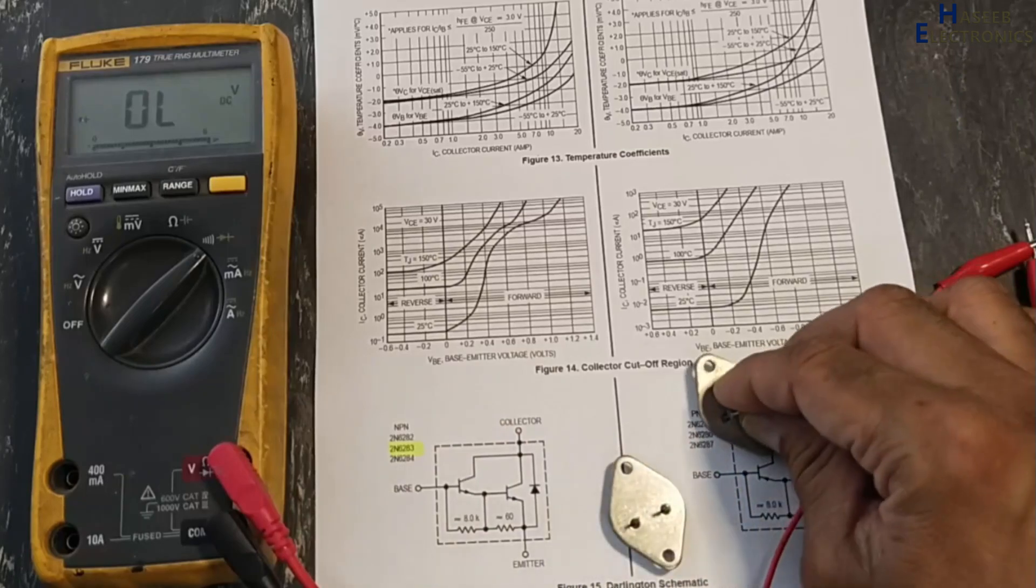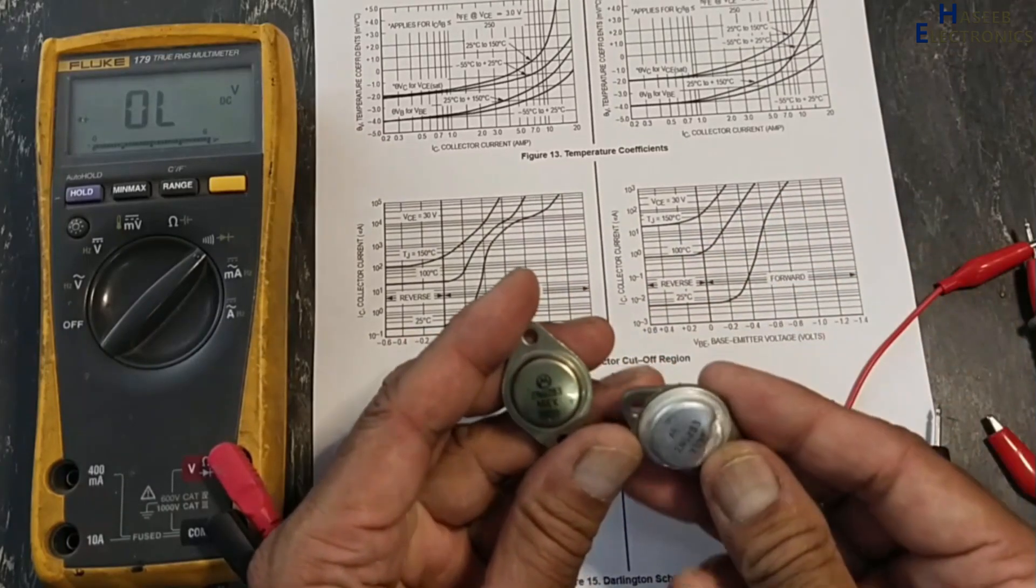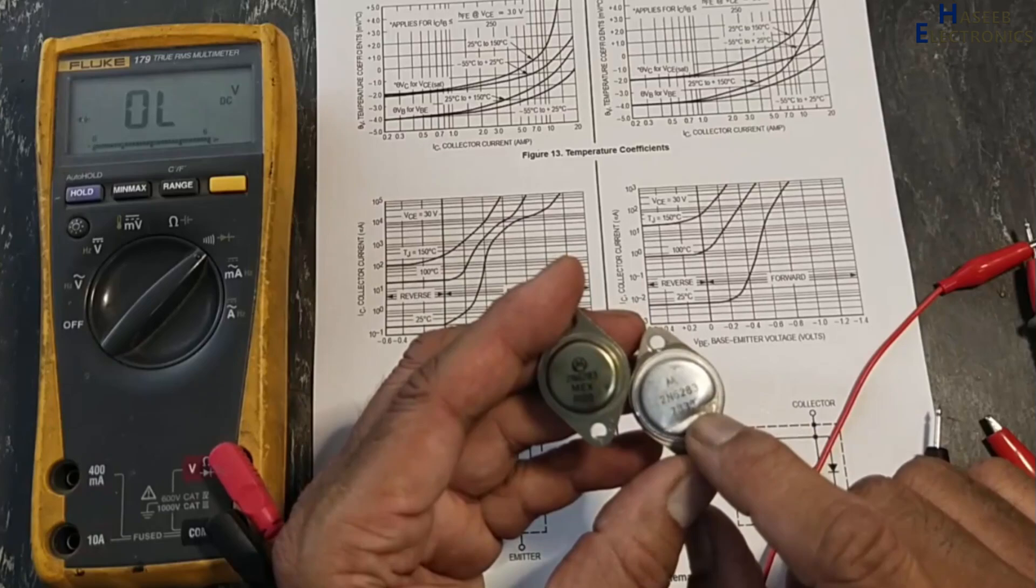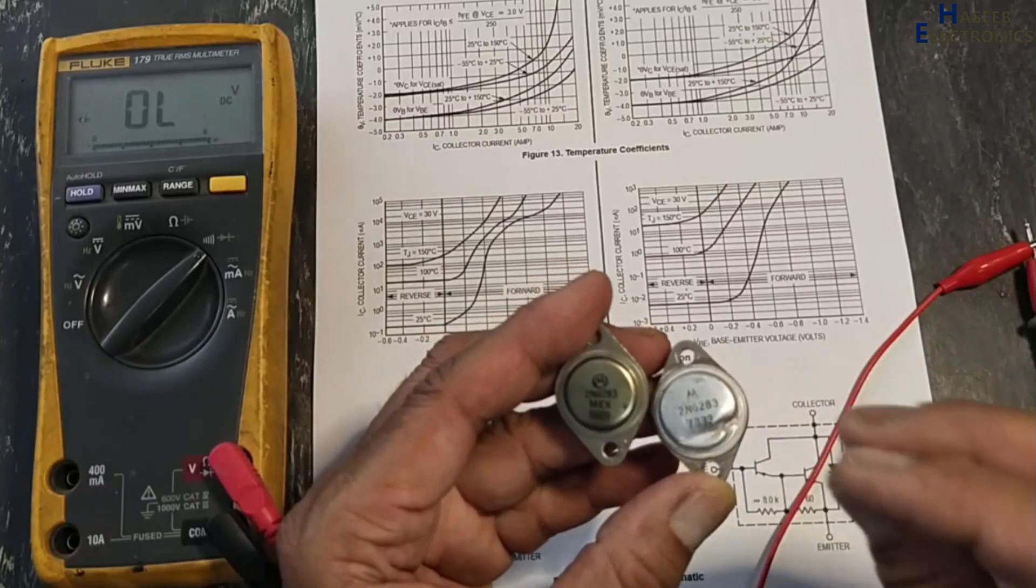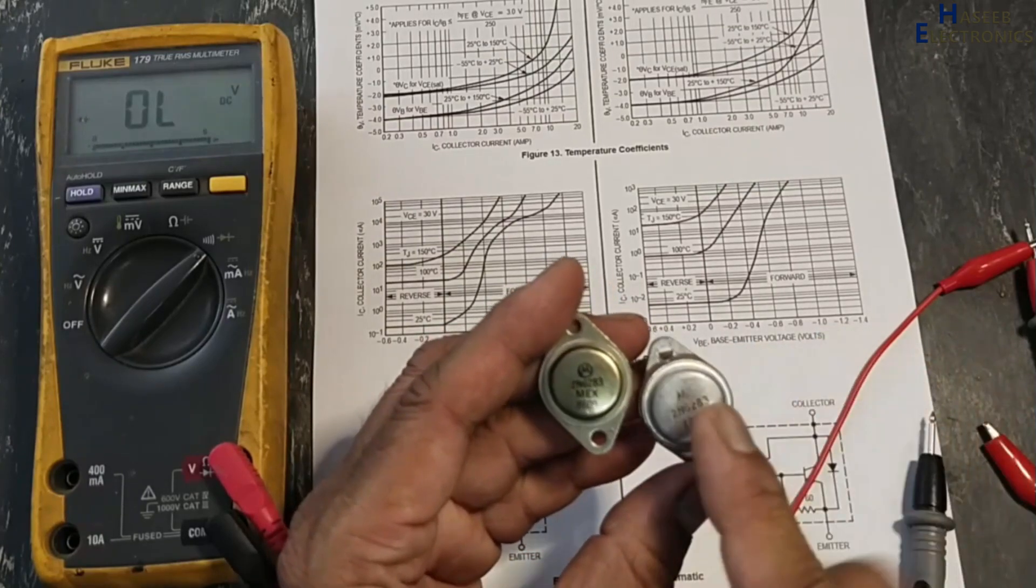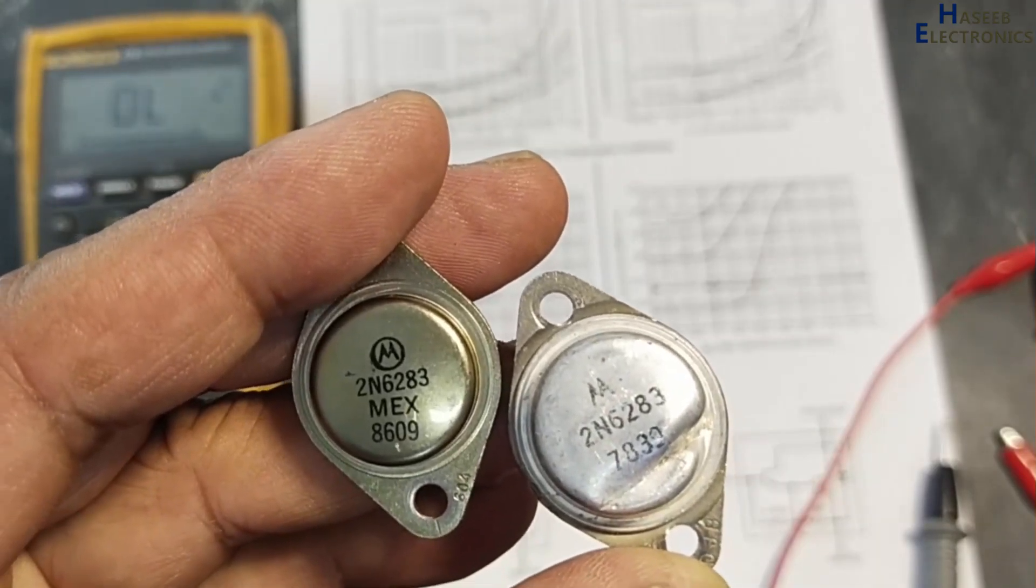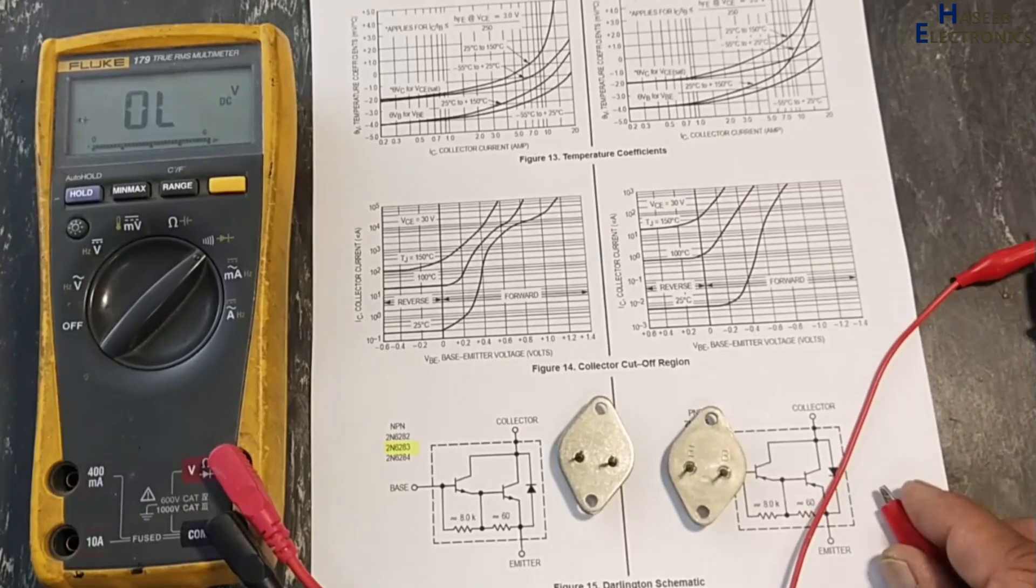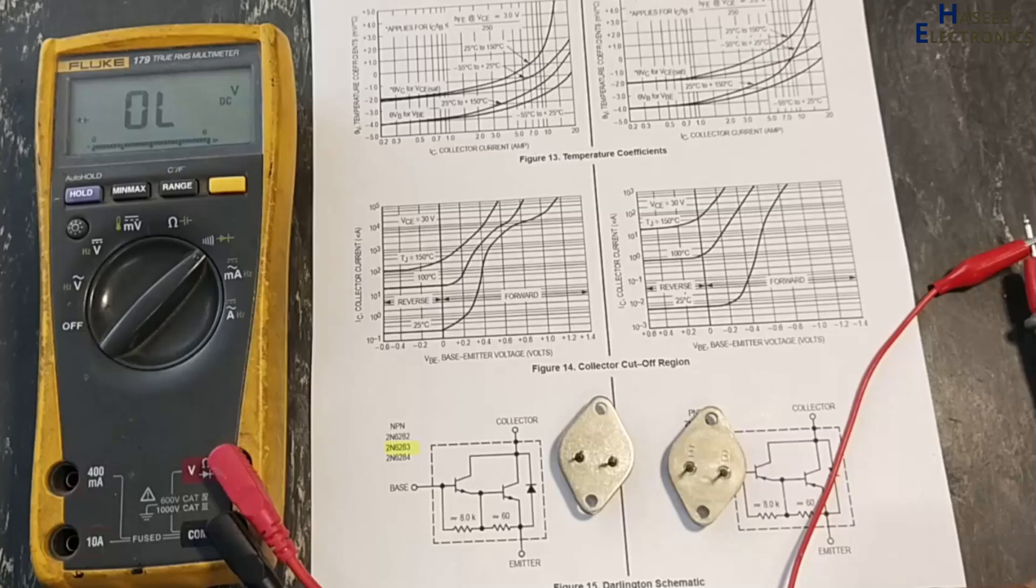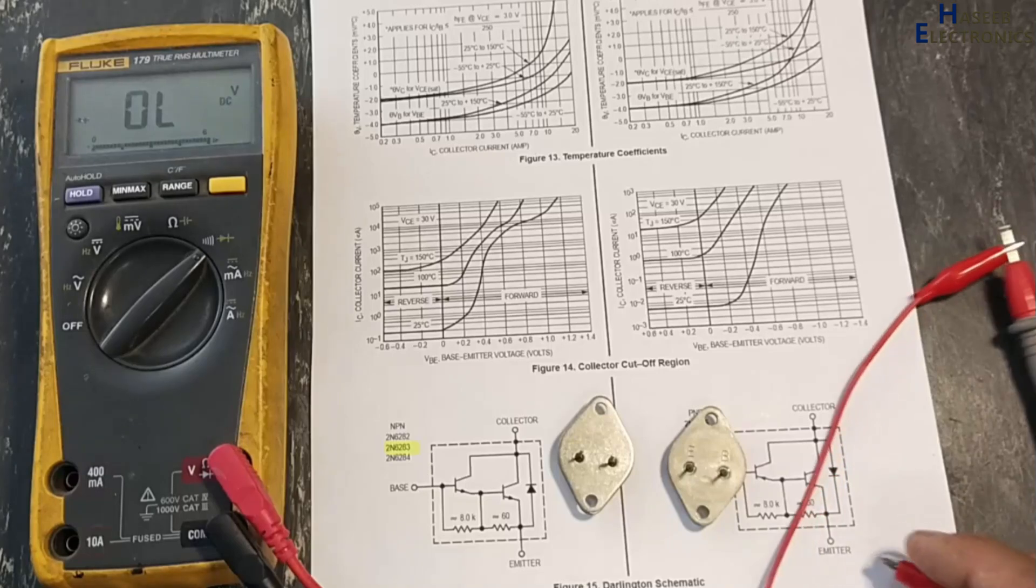This is good. Both are same numbers. Even its body is punched from here, it is pressed, but it is good. This is bad, 2N6283. If you enjoyed this video, give a thumb up. If you have any question, please write in the comments. Thanks for watching.